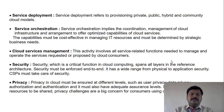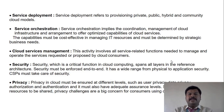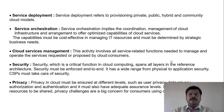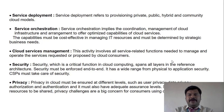Service deployment covers the three service layers delivered to customers through the internet using various deployment models: private cloud, public cloud, hybrid cloud, and community cloud. For example, if two organizations don't need privacy, they can use a public cloud. If privacy is needed, they use a private cloud. If both need some level of privacy, they use a hybrid cloud, and if they belong to the same community, they use a community cloud.